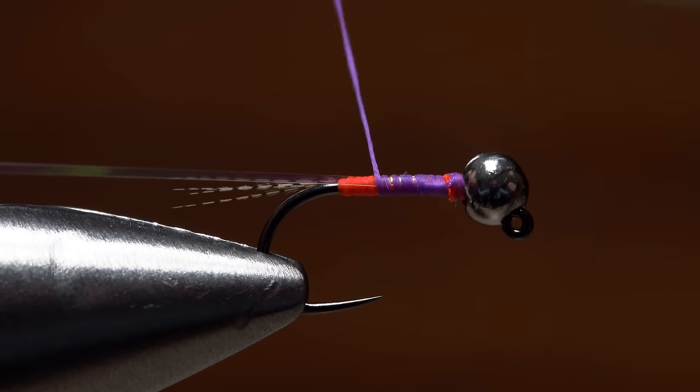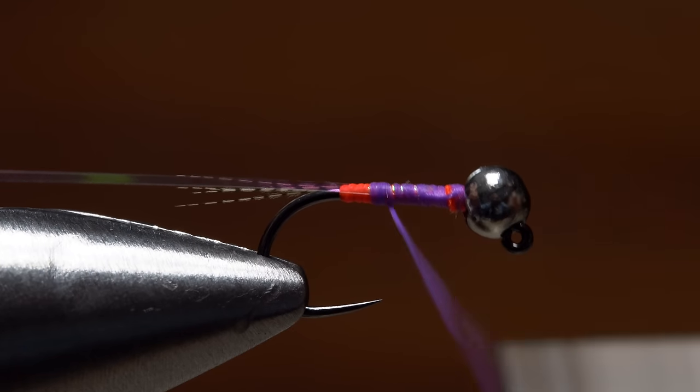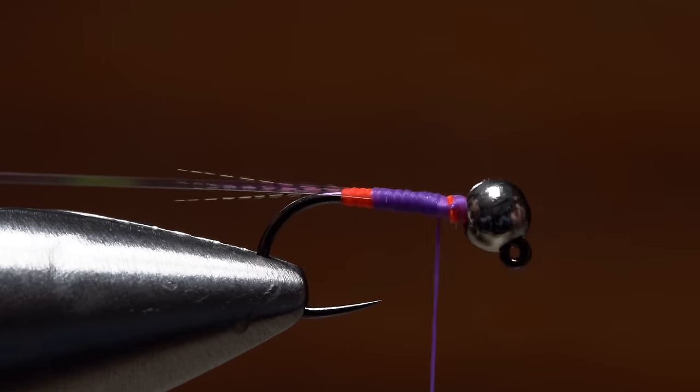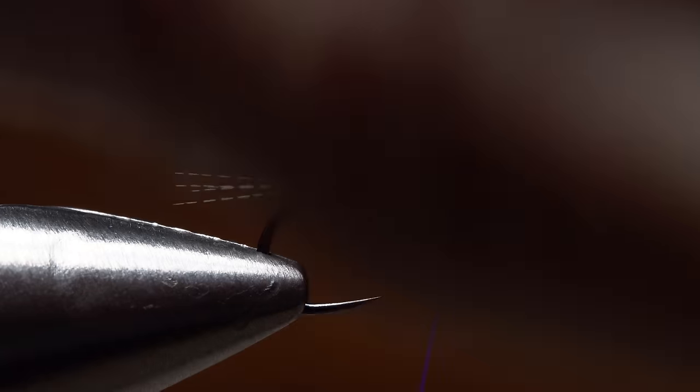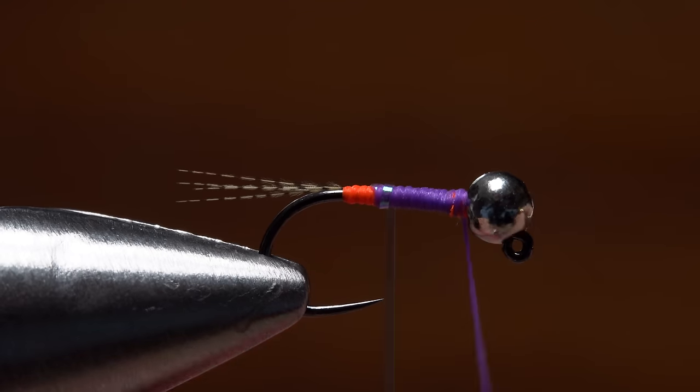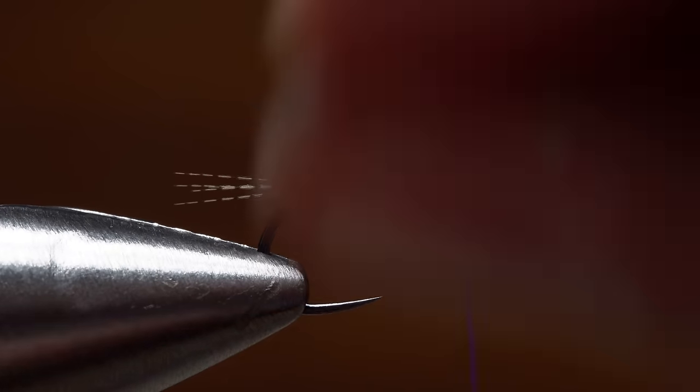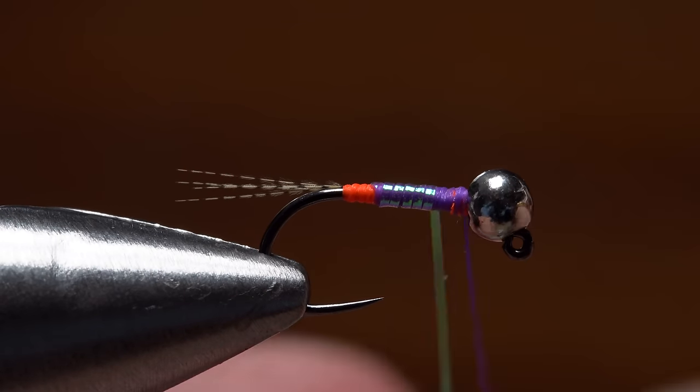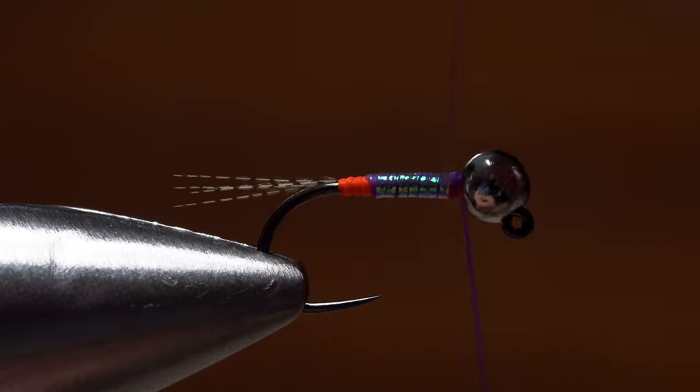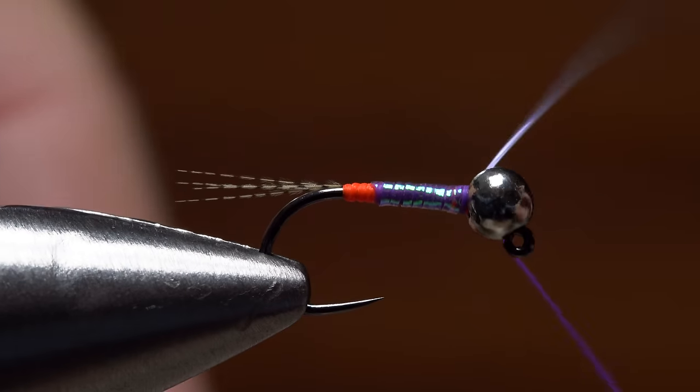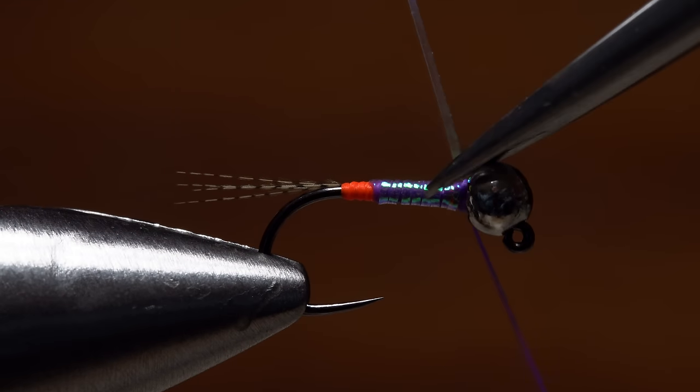Continue taking wraps with your thread all the way back to the hook point, then forward to just behind the bead. Get hold of the flashaboo and begin making touching or slightly overlapping wraps with it up the hook shank over top of the purple thread. When you reach the bead, use your tying thread to anchor the flashaboo and snip the excess off close.